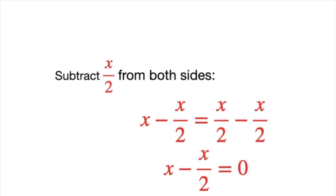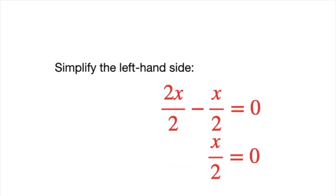Rearrange the equation. First, let's bring all terms involving x to one side. To do this, we subtract x/2 from both sides: x - x/2 = 0. This step ensures we have a single x term to simplify.